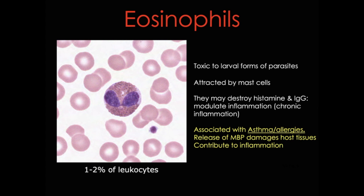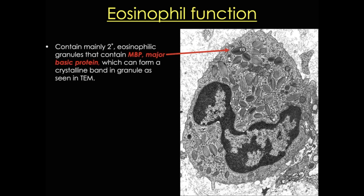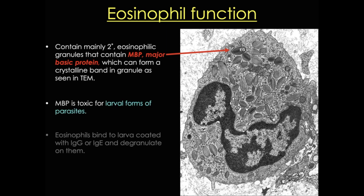So how do eosinophils function? This EM shows the characteristic granules of the eosinophil that contain major basic protein. It's this that gives the cell its acidophilia and acts to kill larval parasites. There's also evidence that it's the release of major basic protein that is so damaging to tissues in asthma and eosinophilic esophagitis.